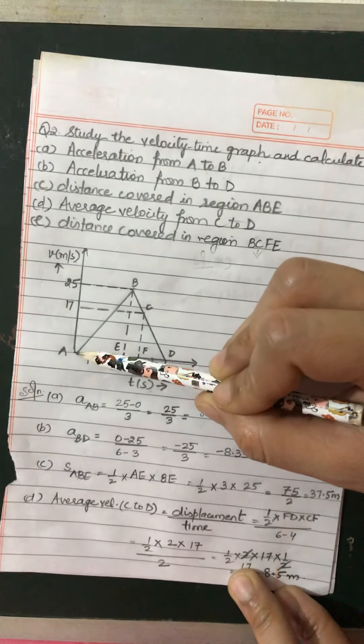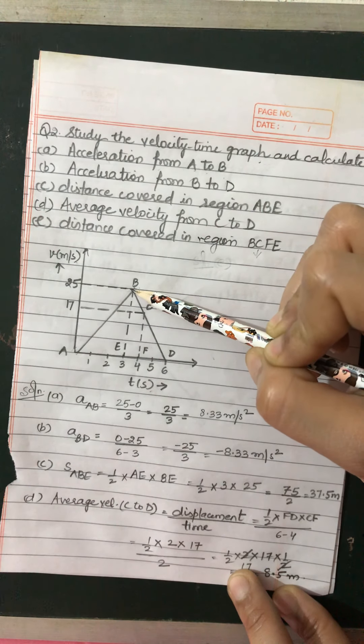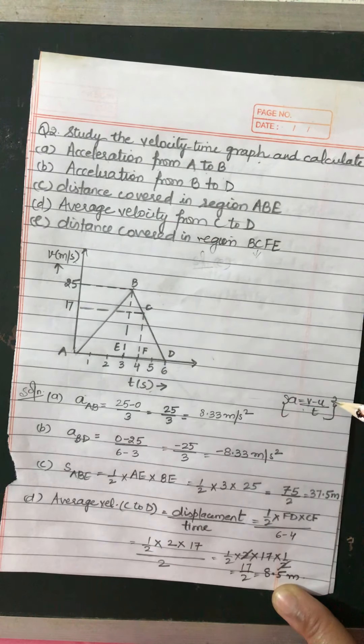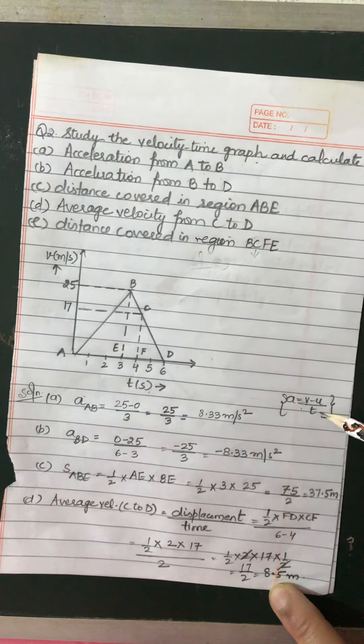From A to B, you have to calculate acceleration. The formula for acceleration is (V minus U) upon T — change in velocity upon time. V is final velocity, U is initial velocity, divided by T which is the time interval. The body was at A initially, then it reached point B. At B, reading from the graph, the final velocity is 25 meter per second. At A the starting velocity is 0. So it is 25 minus 0 upon time. This data is not given in the question; you have to read from the graph.